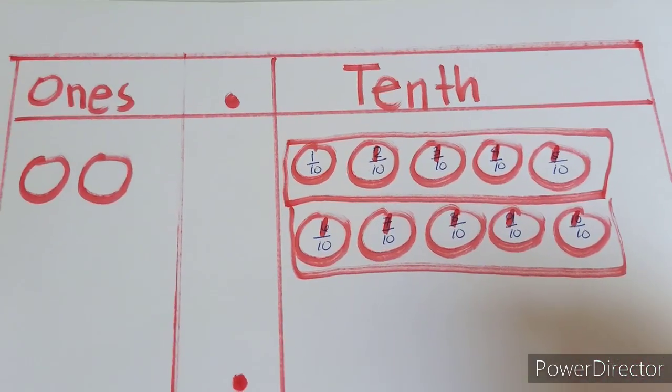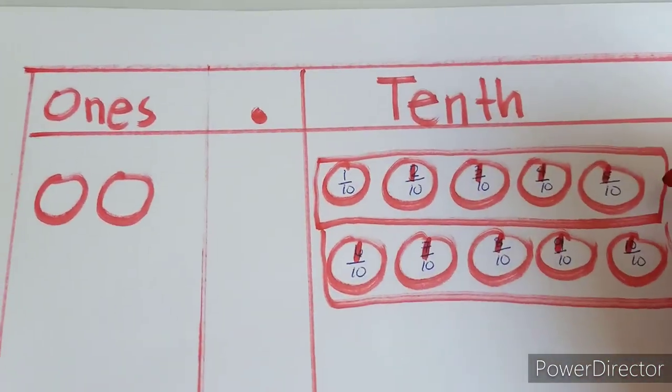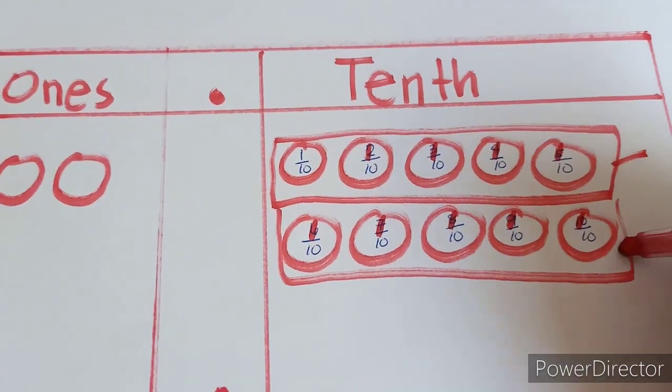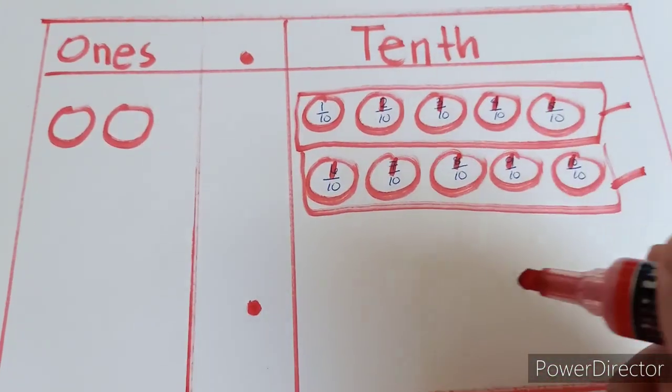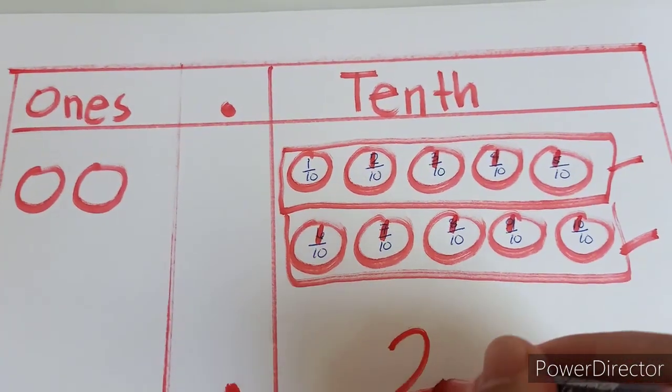How many groups were we able to make? 1 group, 2 groups. Therefore, 2 groups.